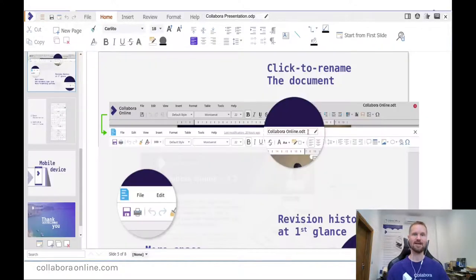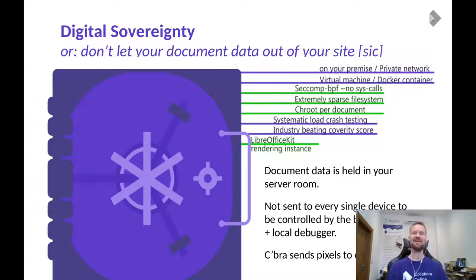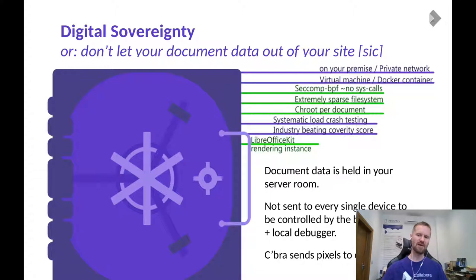Spreadsheets are working very nicely, as are presentations. In terms of digital sovereignty, we really don't let your document data out of your site — the document data is held in your server room and it's not sent to every device. We're sending pixels to the clients, and we can even watermark those to make sure they're not going out to anyone. You can take a screenshot, but it's got your name all over it, so you're providing granular control.